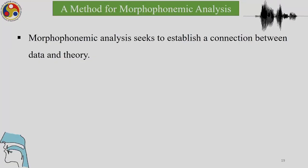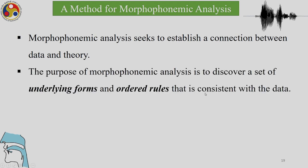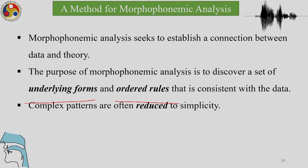What is a morphophonemic analysis? It seeks to establish a connection between the data and theory. Because it is about morphophonemic analysis, it involves phonological data with morphological complexity. The purpose of morphophonemic analysis is to discover a set of underlying forms and ordered rules that is consistent with the data. Complex patterns can be described with great simplicity if we find the underlying forms and see how rules apply to those forms to give us the surface representations.